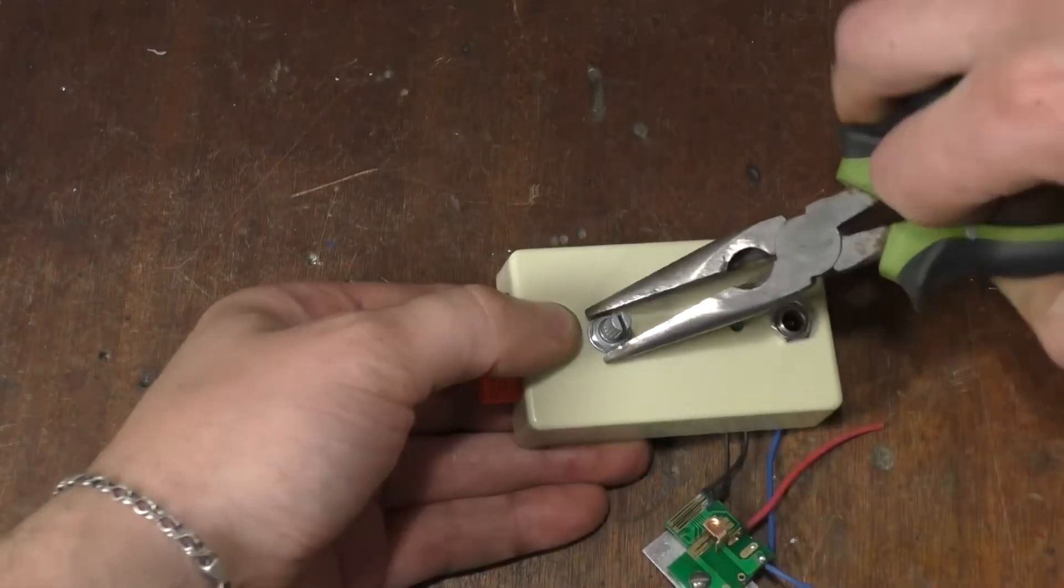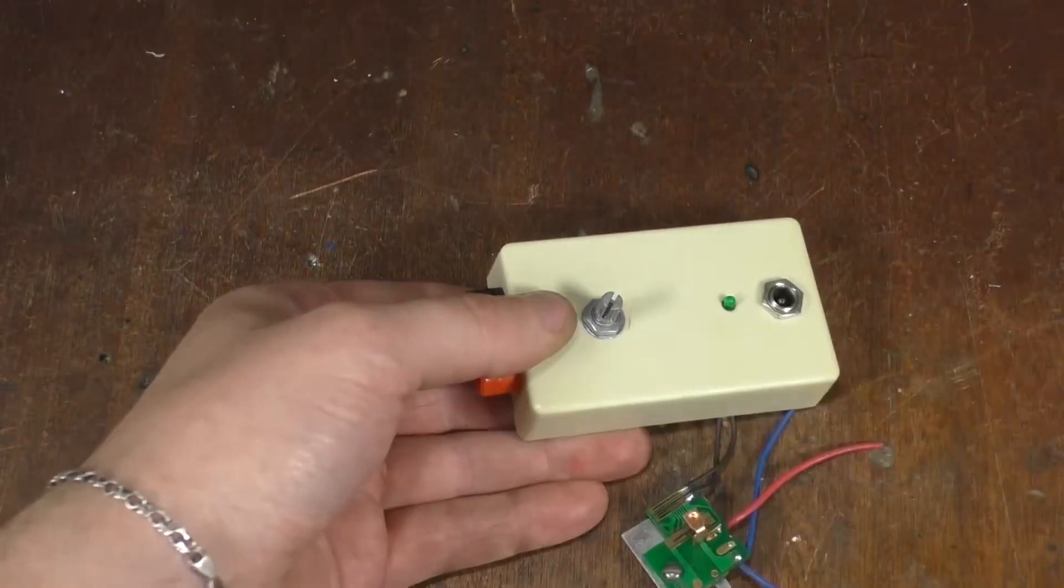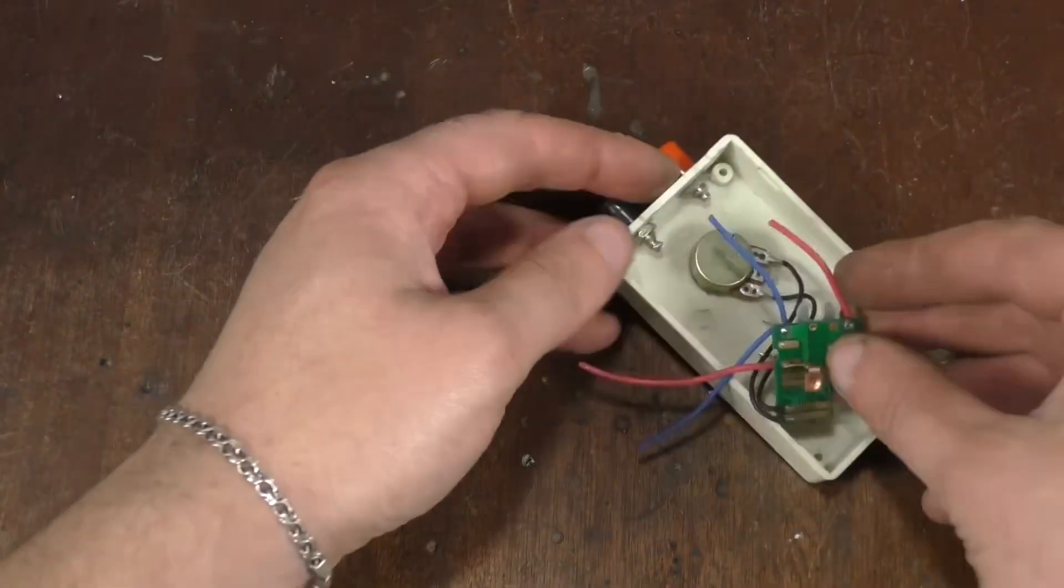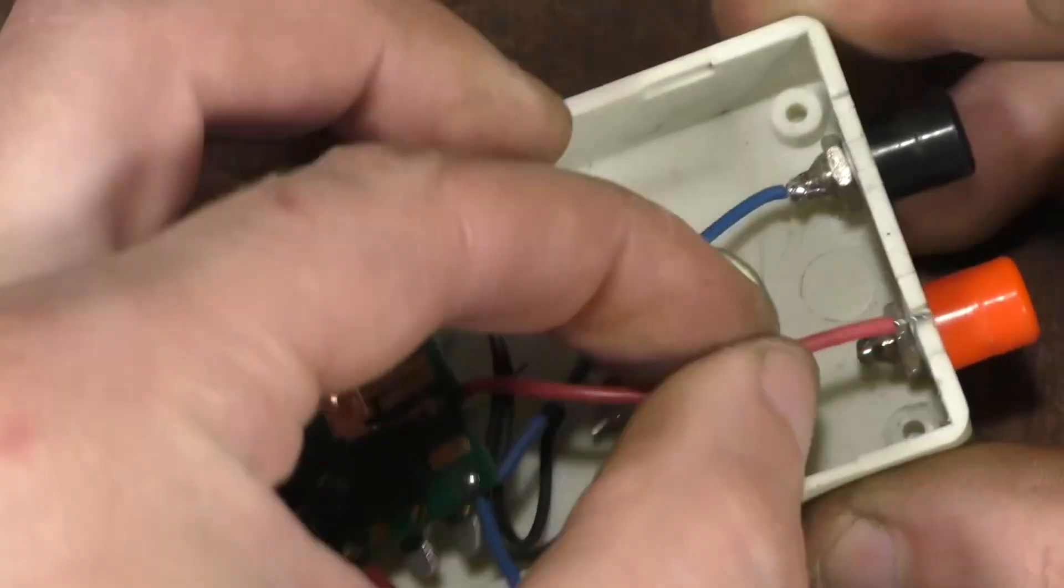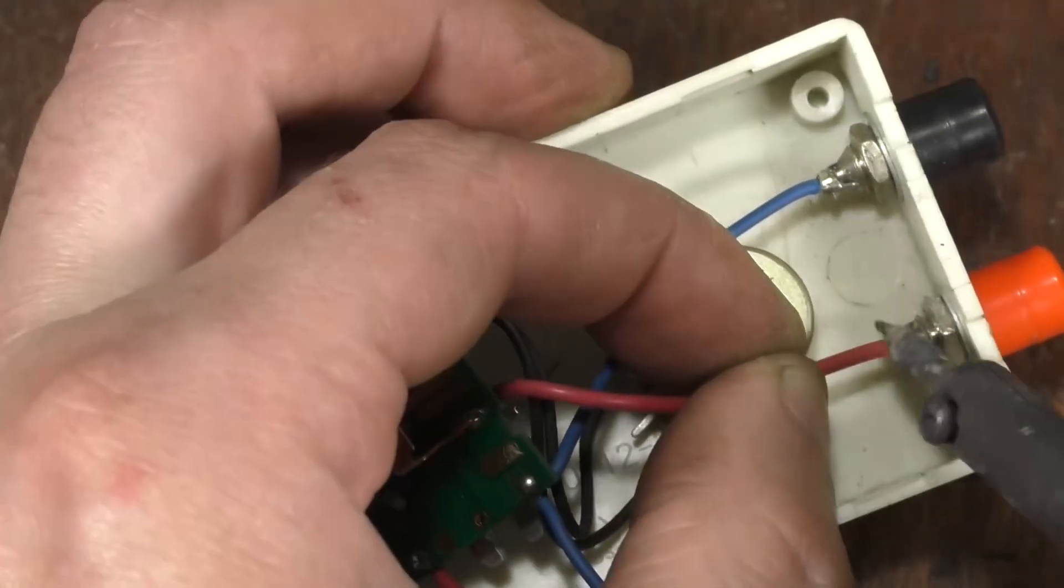Next, you need to solder wires from the board to the connectors. The output is soldered to the side connectors, meaning the contacts go to the motor.